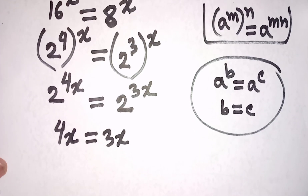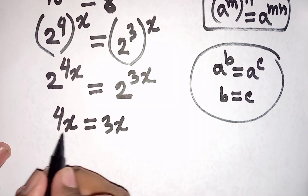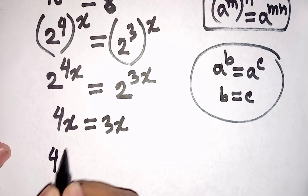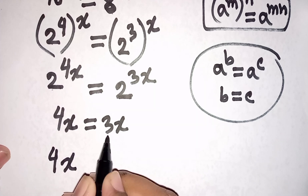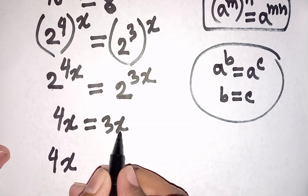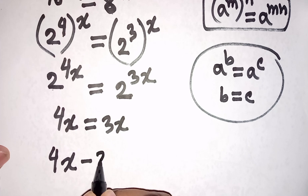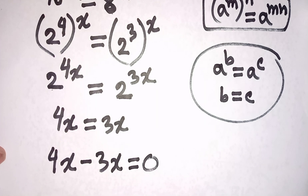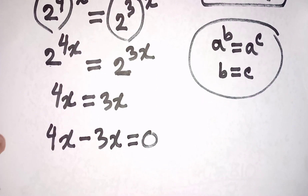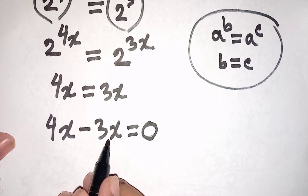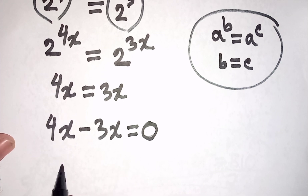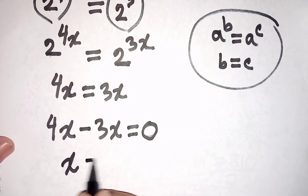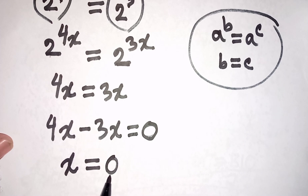Now we can write here: we have 4x, then take 3x to the left side, so this will be minus 3x is equal to 0. Now 4x minus 3x equals x, so x is equal to 0. This is the value of x.